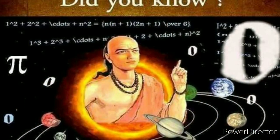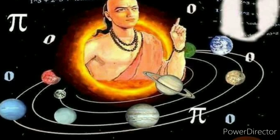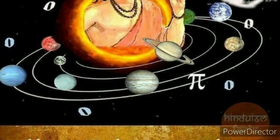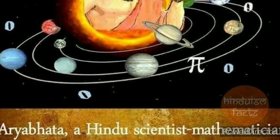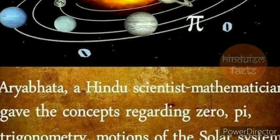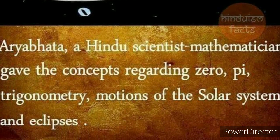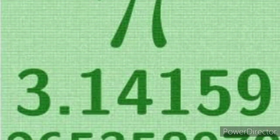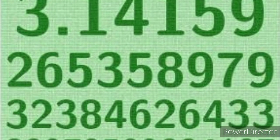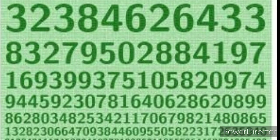One of his discoveries is the approximation of pi, given in Aryabhatta: add 4 to 100, multiply by 8, then add 62,000. By this rule, the circumference of a circle with a diameter of 20,000 can be approached. The calculation yields 3.1416, which is close to the actual value of pi, 3.14159.